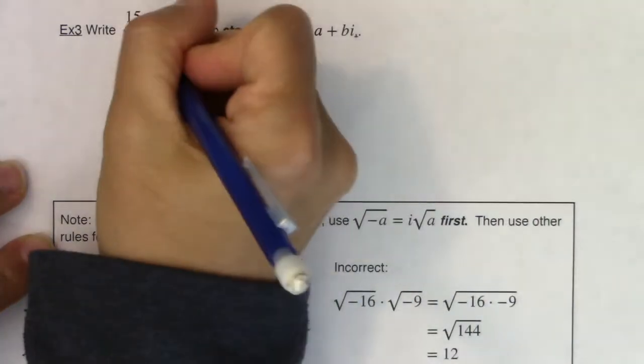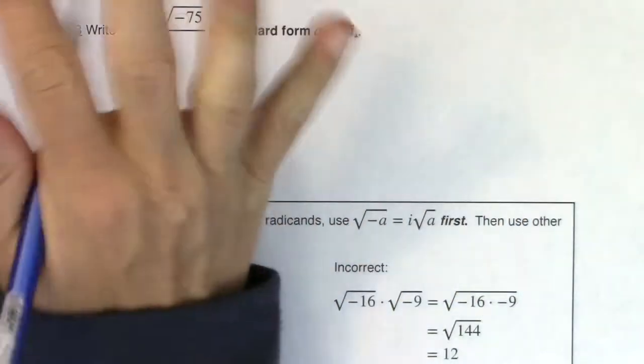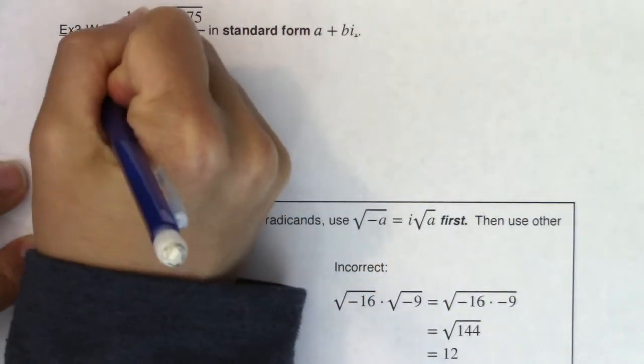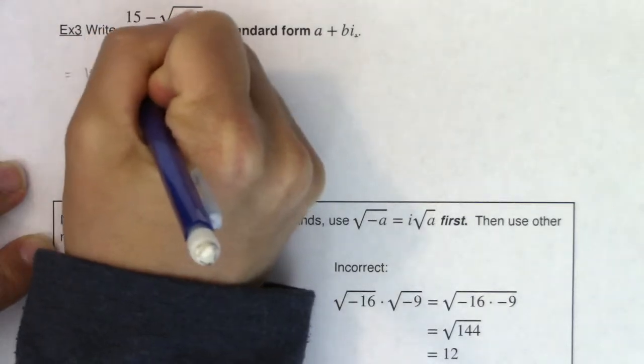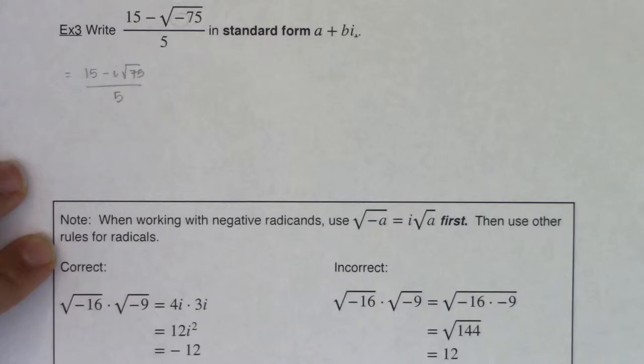So here's what I mean by that. I'm gonna take this and the first thing I see is the square root of the negative. So I know I'm gonna take the i out first. So this is going to be equal to 15 minus i times the square root of 75 over 5. That's the first piece that I want to address here.